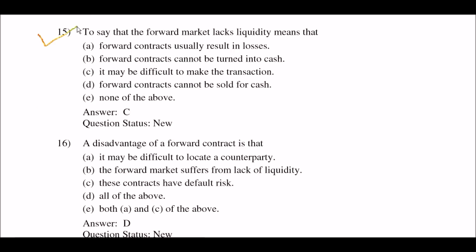Next question: to say that the forward market lacks liquidity means that — option A: forward contracts usually result in losses; option B: forward contracts cannot be turned into cash; option C: it may be difficult to make the transactions; option D: forward contracts cannot be sold for cash; option E: none of the above. The right answer is option C: it may be difficult to make the transaction.